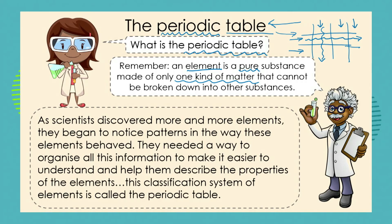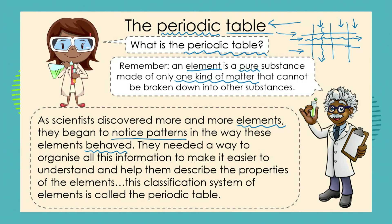Now as scientists discovered more and more elements, more of these pure substances, they began to notice patterns in the way the elements behave. Could they conduct electricity? Could they conduct heat? Did they explode with water? Did they burn in oxygen? So they needed a way to organise all this information, and they kept on discovering new kinds of elements. It all became too much — we need to organise these elements.